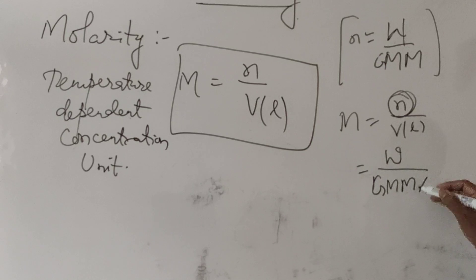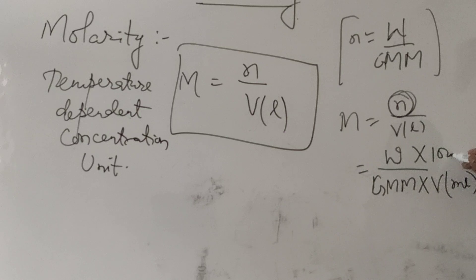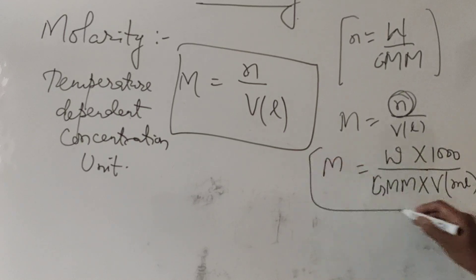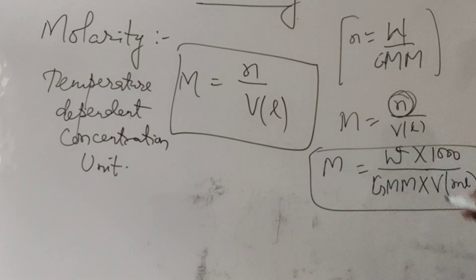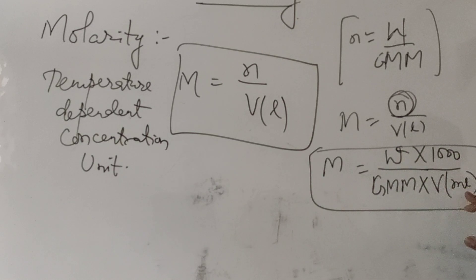If the volume is not given in liters but in milliliters, then we divide by 1000. So molarity equals weight of solute multiplied by 1000, divided by gram molecular mass multiplied by volume of solution in milliliters.